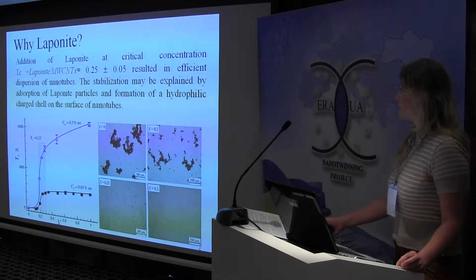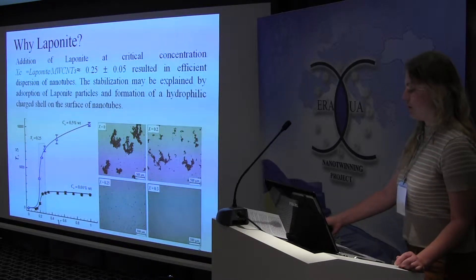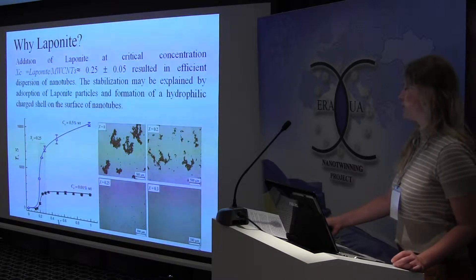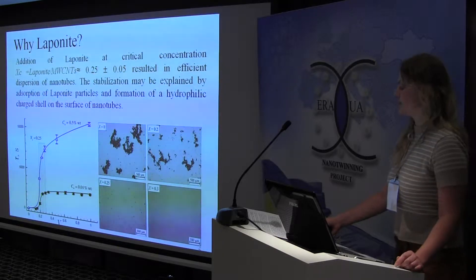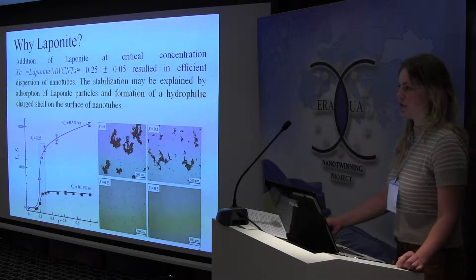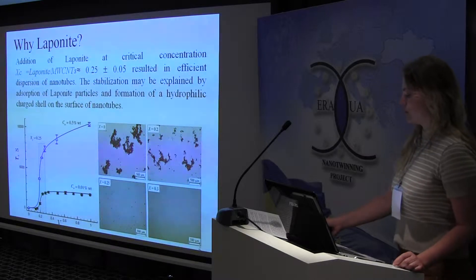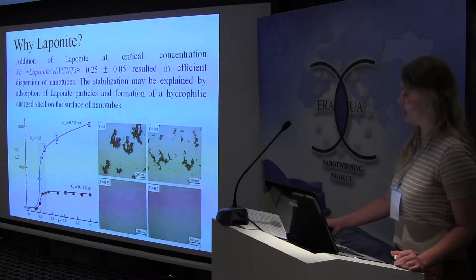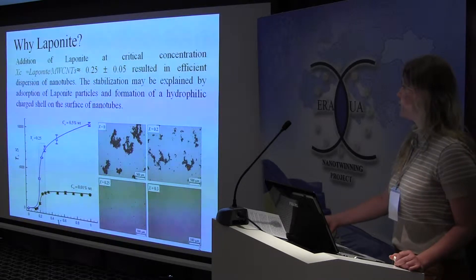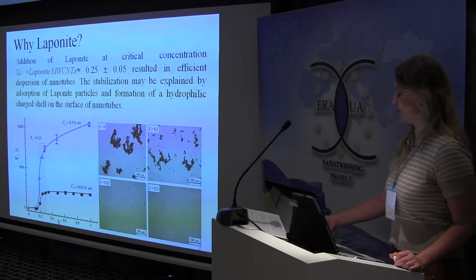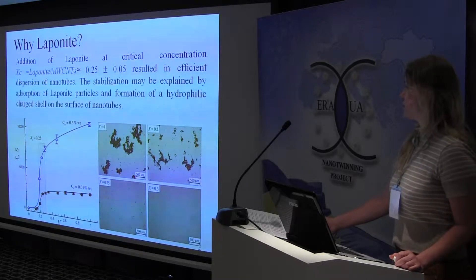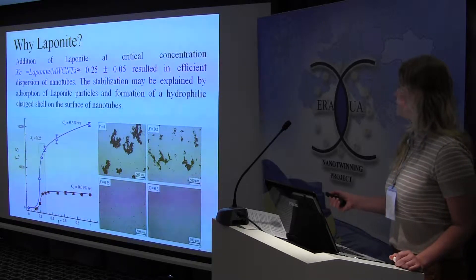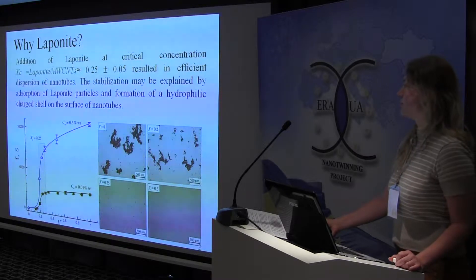Why do we use laponite? Several methods have been proposed for dispersion of carbon nanotubes, but even debundled nanotubes have low dispersibility in most solvents. It was shown that introduction of charged nanoparticles may significantly improve dispersibility and give a stable suspension. Addition of laponite at a critical concentration of 0.25 mEq resulted in efficient dispersion of nanotubes.